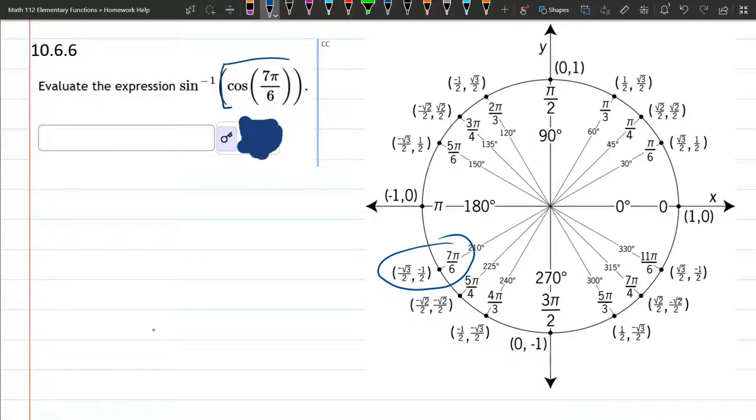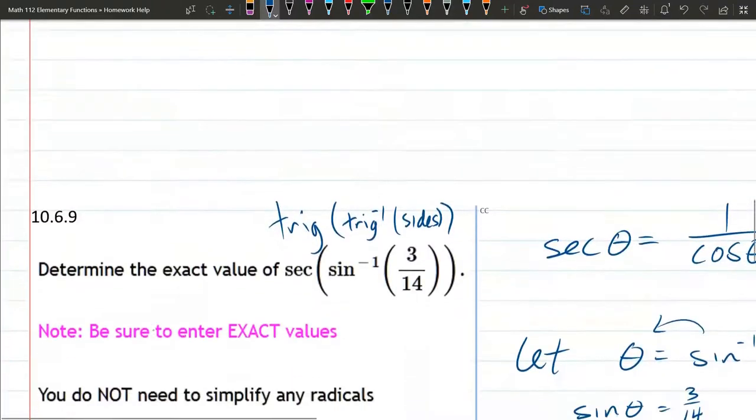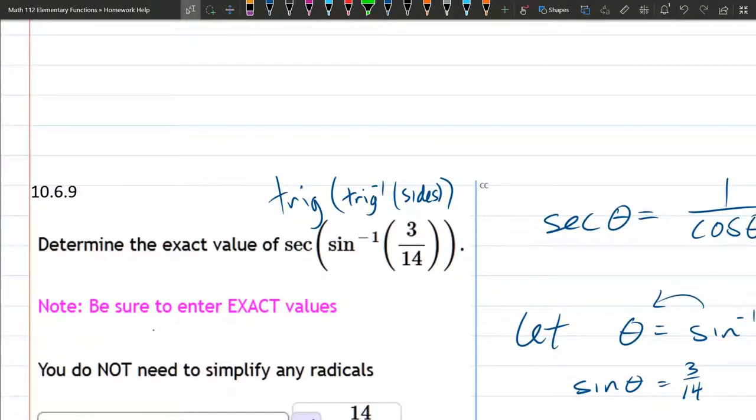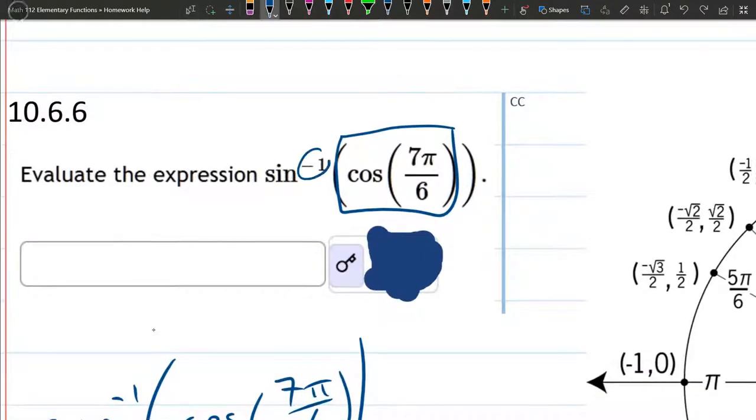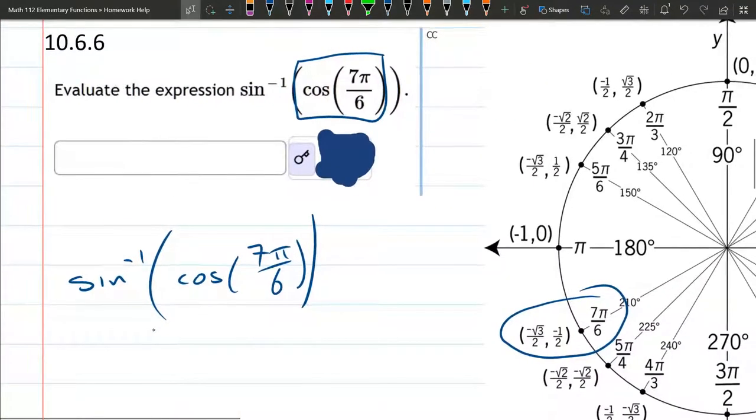We know the value of cosine 7π over 6, so first we're going to deal with that. Now I want to warn you, this problem looks very similar to a problem to this one here. But the main difference is where is the inverse? In this one, the inverse is on the inside and you have to draw a triangle. The problem we're working on now, the inverse is on the outside, and they have a very different way to simplify or evaluate them.